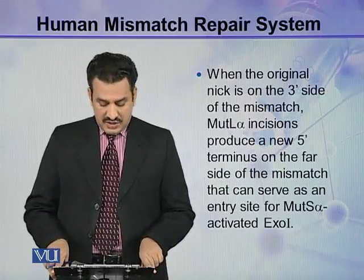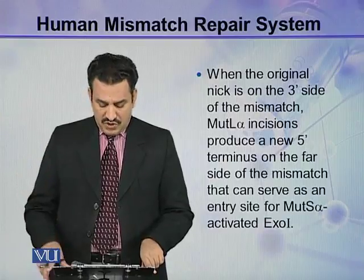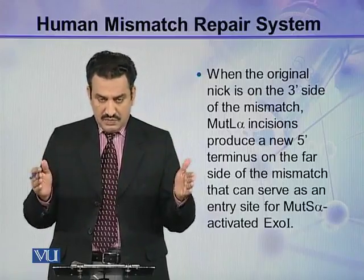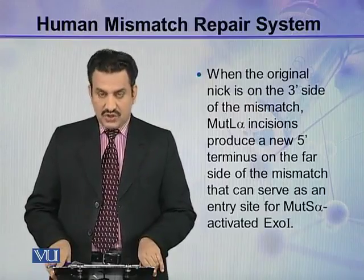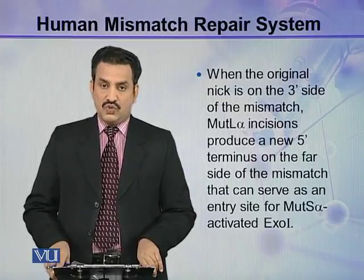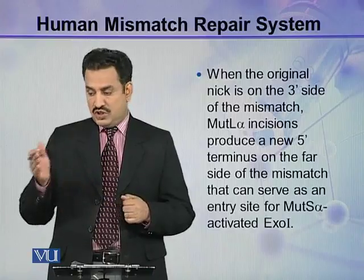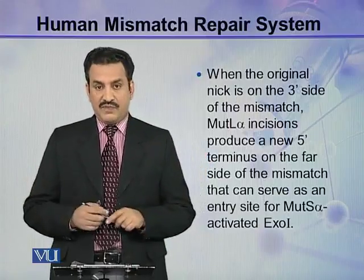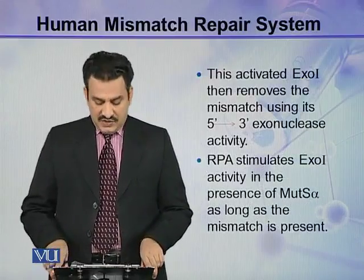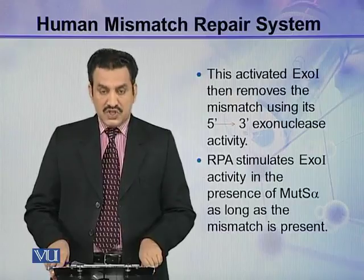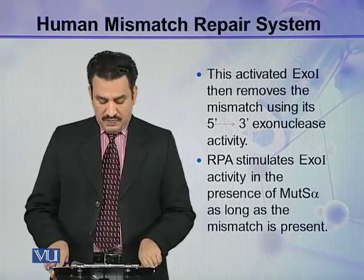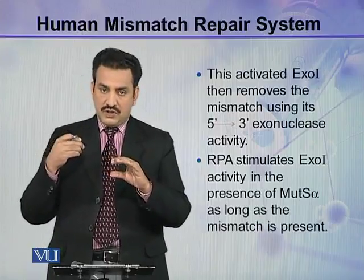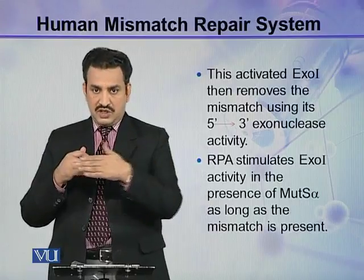When the original NIC is on the 3' side of the mismatch, MutL-alpha incision produces a new 5' terminus on the far side of the mismatch, which can serve as an entry site for MutS-alpha-activated Exo-1. So if the initial NIC is on the 3' side, a new NIC is introduced on the far side — that is, on the 5' side. This activated Exo-1 then removes the mismatch using its 5' to 3' exonuclease activity, hydrolyzing the discontinuous strand.